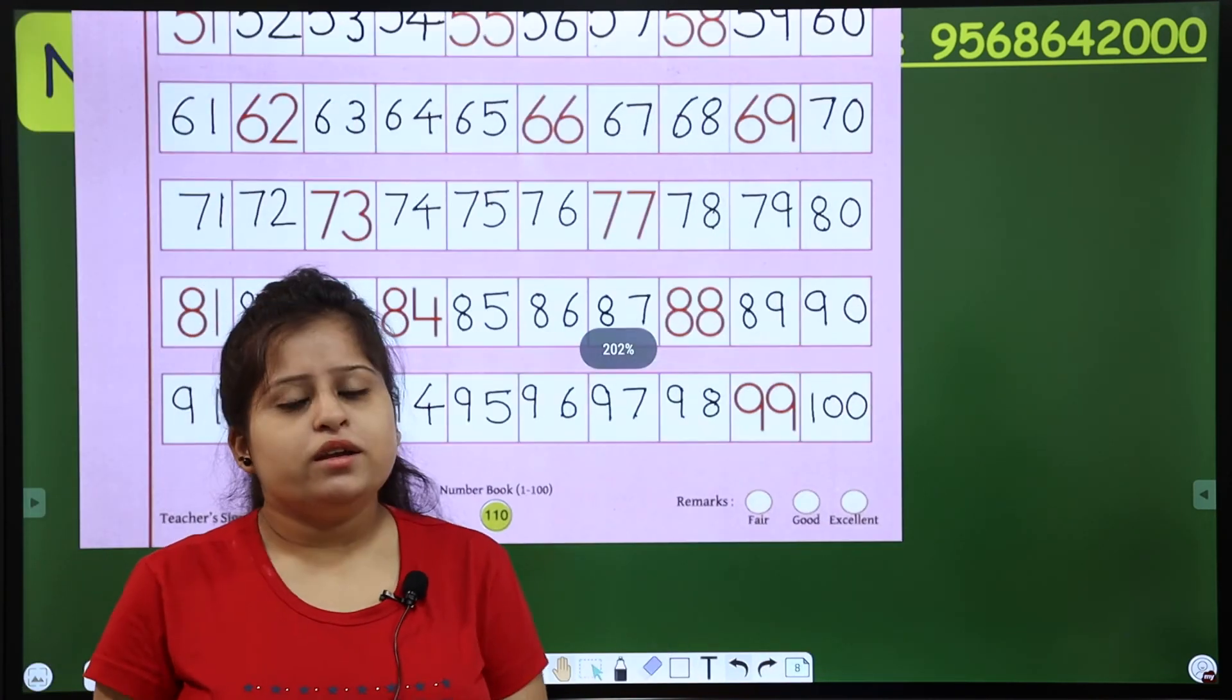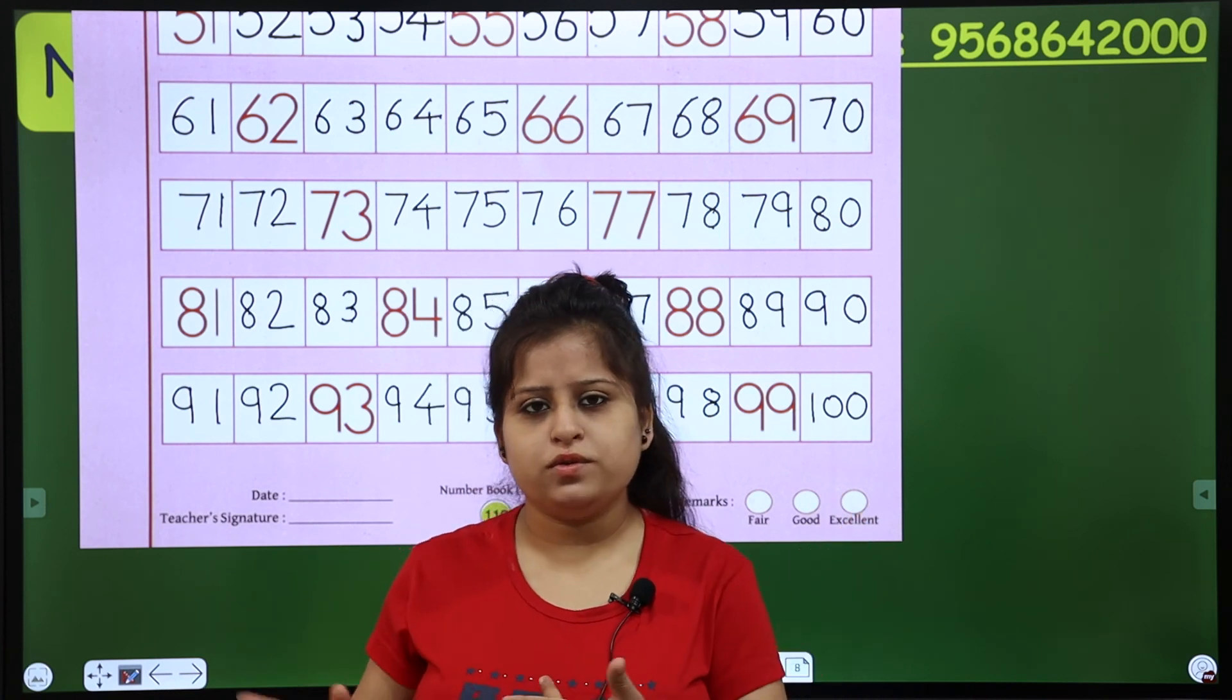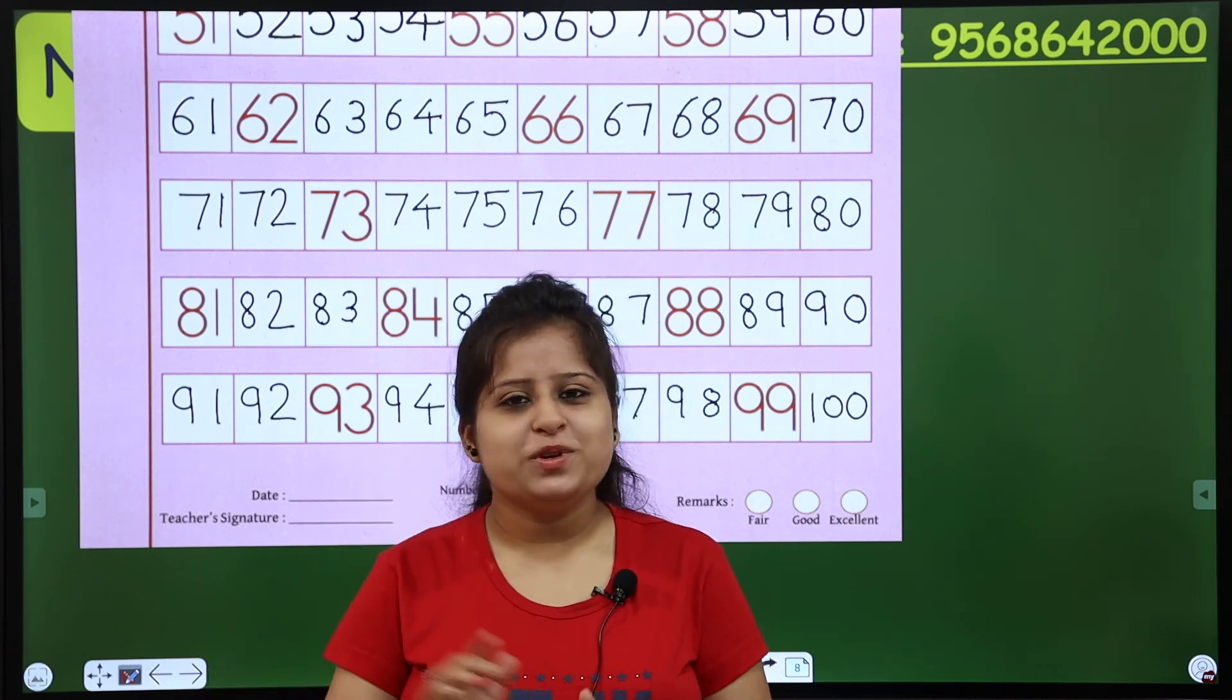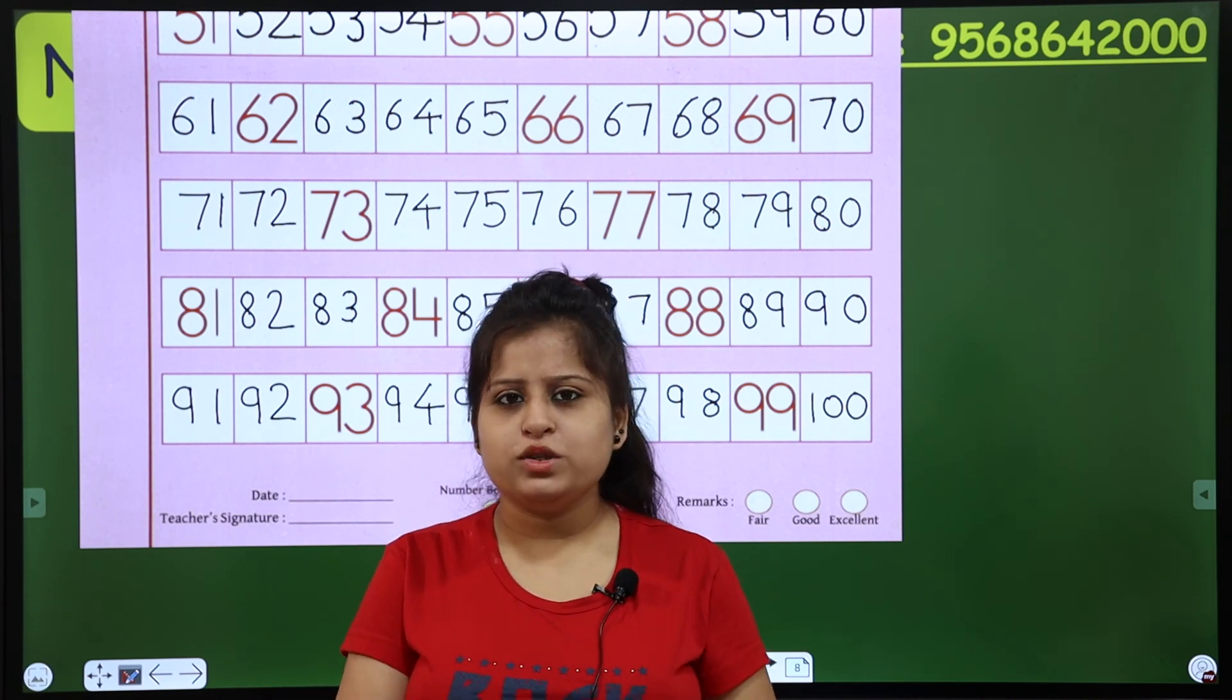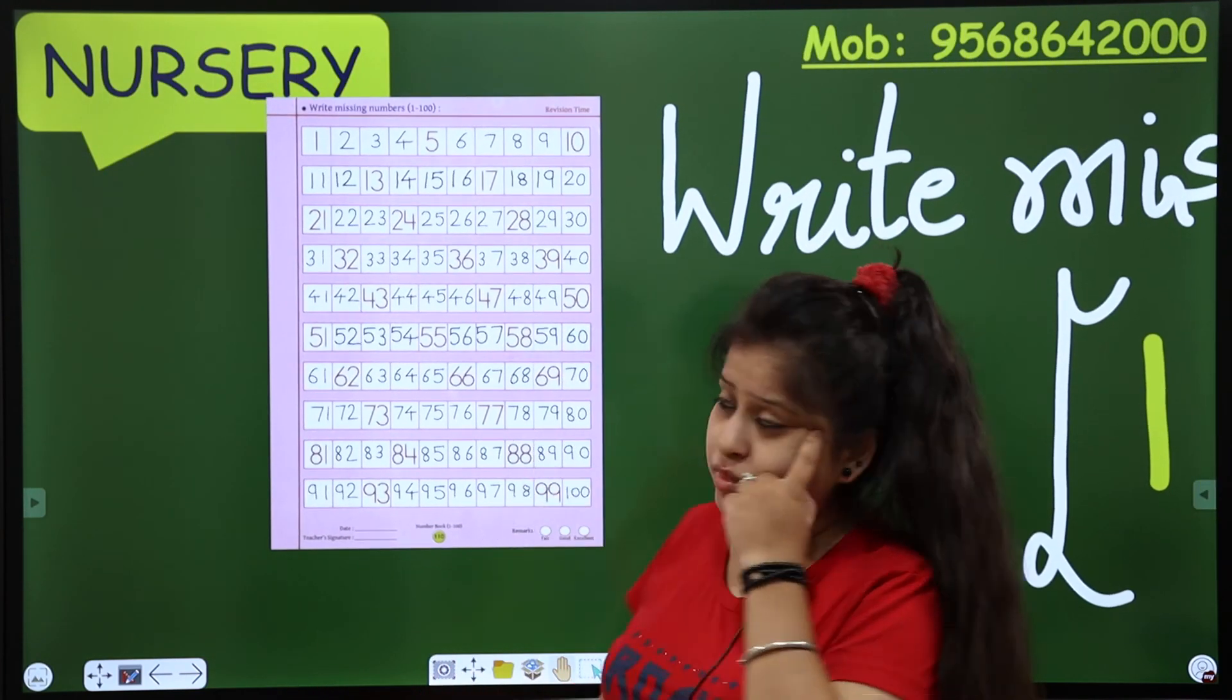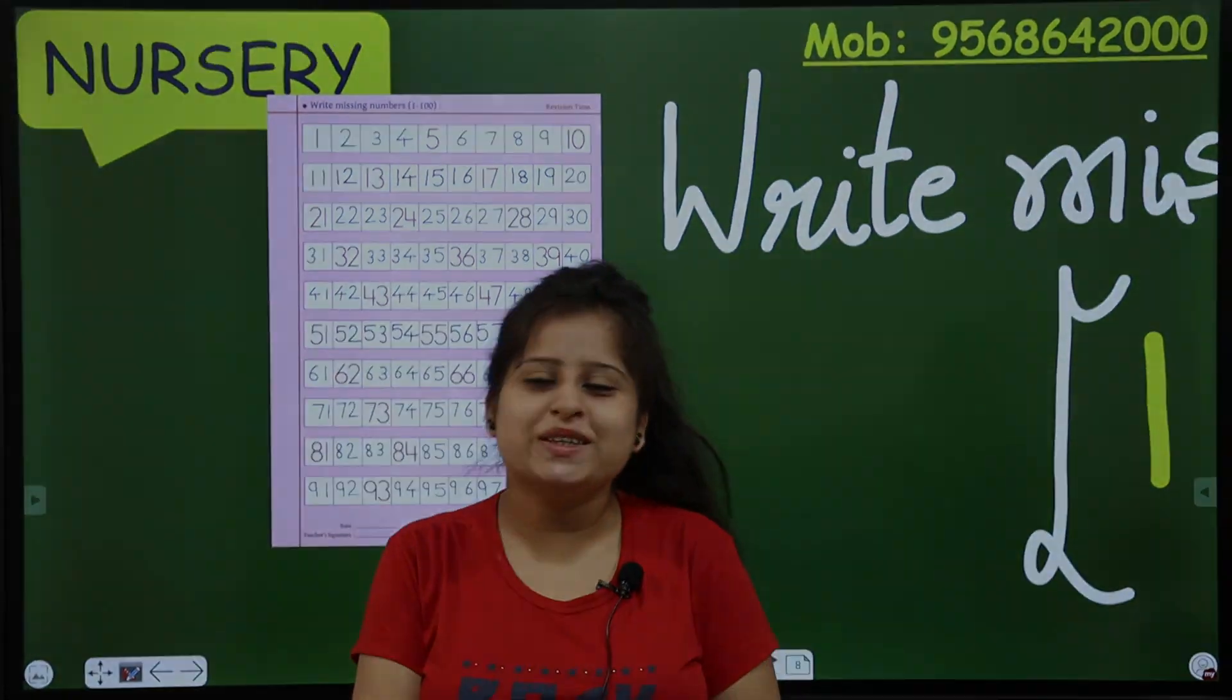So we are done with our counting 1 to 100. Fine. Because 1 to 50 was in the previous class, 51 to 100 was in this class. Now what will you do? I will do more counting, but I will give you more assignments. It will be reduced, okay? You have to strong identification and formation because you have to learn more counting. So you have to do this. Now you have to check your homework. Now what will you do? Do your homework and check your homework. Okay. Bye, I will meet you in the next class.